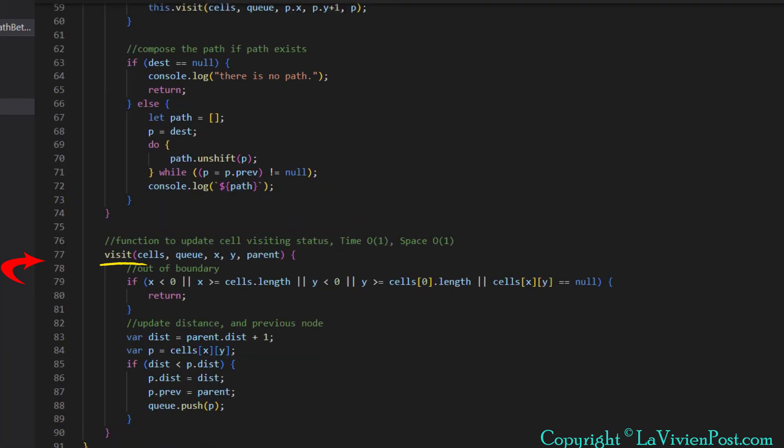Inside the function, we enqueue each valid cell in the queue with plus one distance and also save the parent cell in prev. The last step is to check the variable dest.